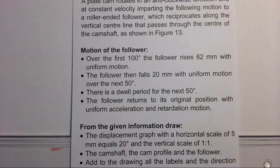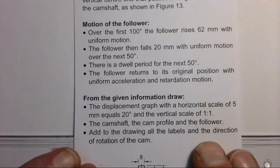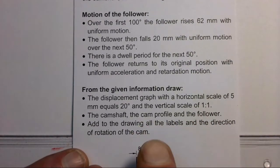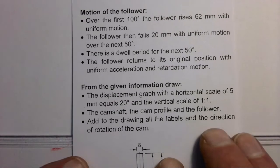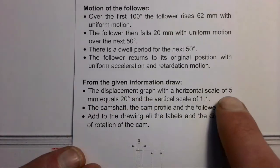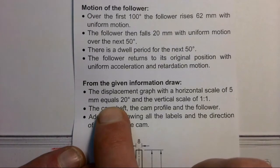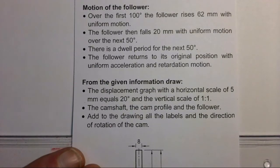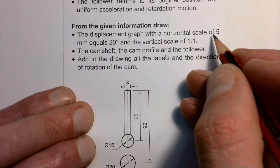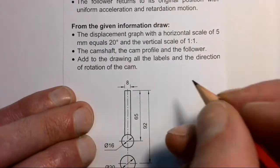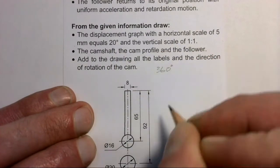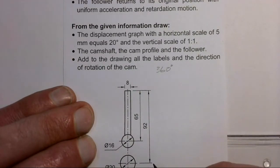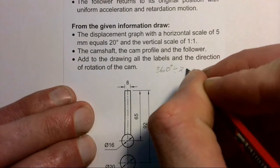To start the displacement diagram, we check our horizontal scale. The question states that every 5 millimeters must equal 20 degrees. We're going to work out how long our baseline must be. With a scale of 5 millimeters to 20 degrees, we take our 360 degrees — one full revolution — and divide by 20 degrees.